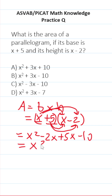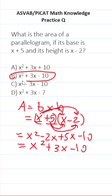Let's clean this up by combining like terms. This becomes x squared. Negative 2x plus 5x is plus 3x minus 10. So the answer is x squared plus 3x minus 10.